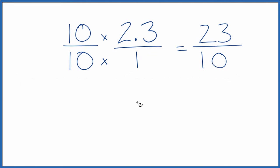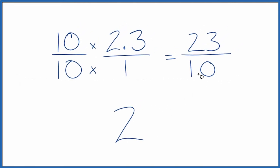10 will go into 23 two times. 2 times 10 is 20. We have 3 left over. Bring the 10 down. Keep that the same.